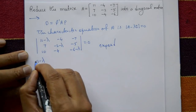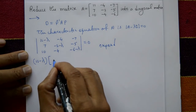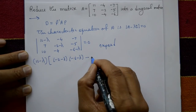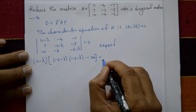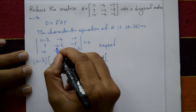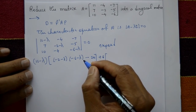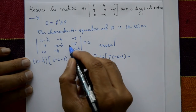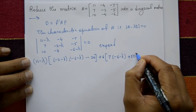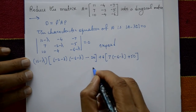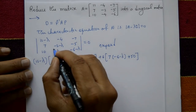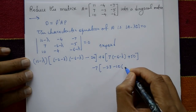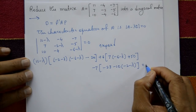Expanding: (11-λ) times [(-2-λ)(-6-λ) minus (-4)(-5)] minus (-4) times [(7)(-6-λ) minus (-5)(10)] plus (-7) times [(7)(-4) minus (-2-λ)(10)]. Working through the multiplications: (-4)×(-4) gives +20 and the sign adjustments, then 7×(-6-λ) with plus 50, and the third term with minus 28.